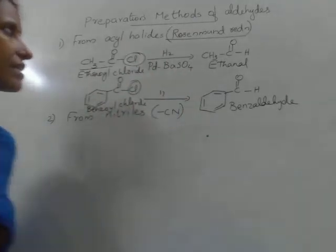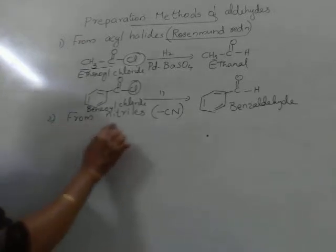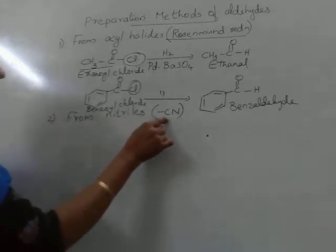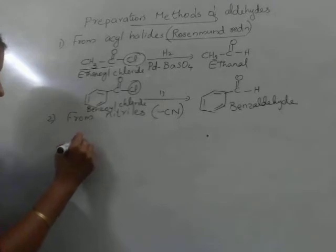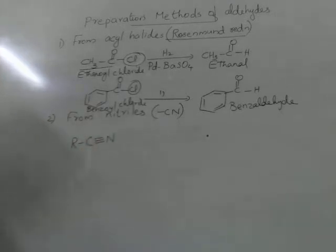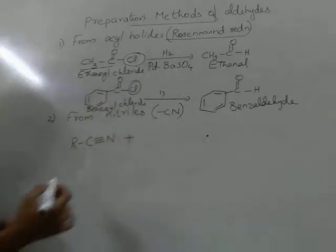Now the second method: aldehydes can be prepared from nitriles. Nitriles or cyanides contain the cyano group. Taking a nitrile RCN, when it is treated with a reducing agent — this is also a reduction reaction.